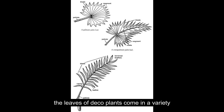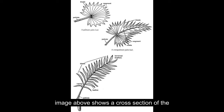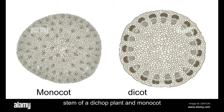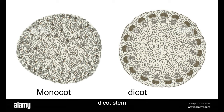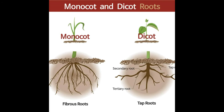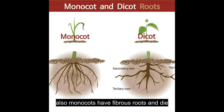The leaves of dicot plants come in a variety of shapes and sizes, and the veins form branching patterns. The image above shows a cross section of the stem of a dicot plant and monocot. Note how the vascular bundles are scattered in the monocot stem, and arranged in a circular pattern in the dicot stem. Also, monocots have fibrous roots and dicots have a tap root.